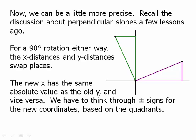So the new x value has the same absolute value as the old y value and vice versa. We have to think through plus and minus signs for the new coordinates based on the quadrants.